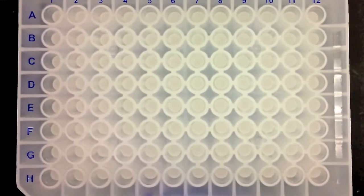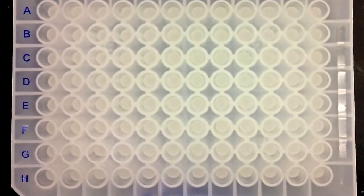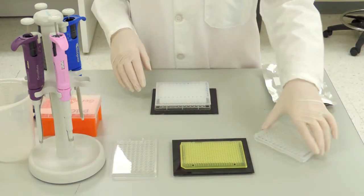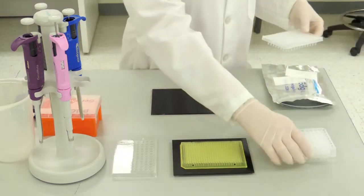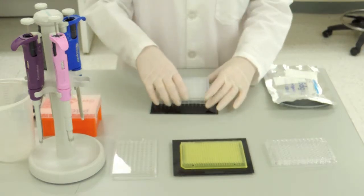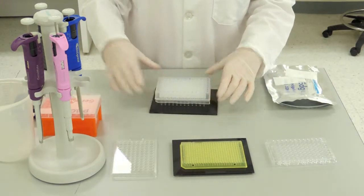As you can see, after the first spin, the columns are slightly less hydrated but still maintain an even distribution. The Performa DTR plate is transferred from the waste plate to the capillary plate. Please note that the waste plate can be used multiple times.